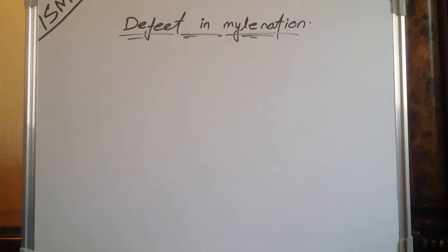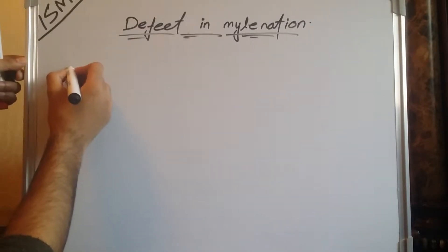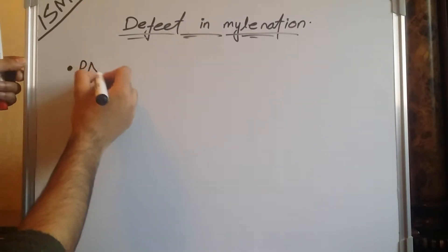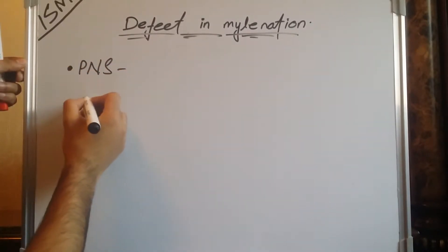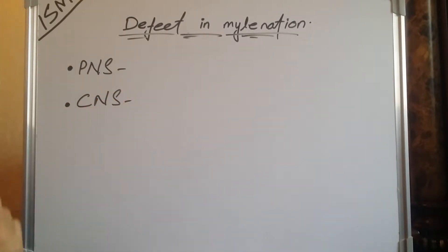Let us discuss the defects in myelination. As we discussed in our previous lecture, what myelination is and how they conduct nerve impulses. There are two pathological conditions which arise due to defects in myelination — one if this defect occurs in the peripheral nervous system, and one if it occurs in the central nervous system.